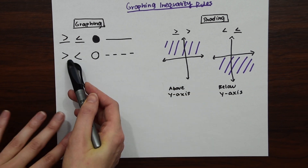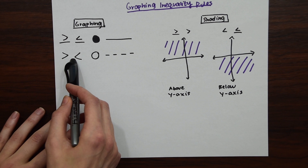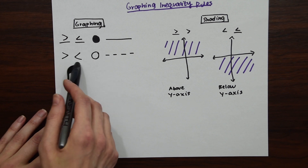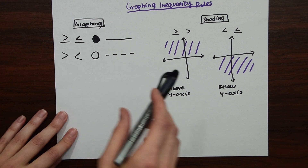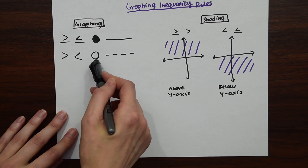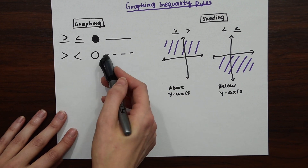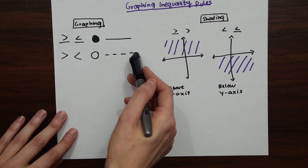If it's strictly greater than or less than, the solution does not include the exact line. To show that, we leave an open circle to show the solution isn't included, and then draw a dotted line.